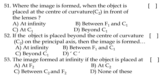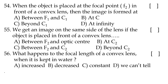Fifty-first question: where is the image formed when the object is placed at the center of curvature C2? Option C, at C1 (center of curvature). Fifty-second question: if the object is placed beyond the center of curvature on the principal axis, the image formed is option B — between F1 and C1. Fifty-third question: the image formed at infinity if the object is placed at option A, F2 (focus).